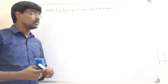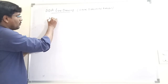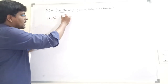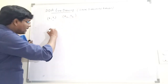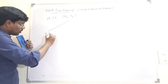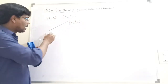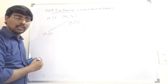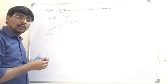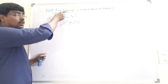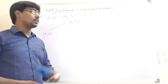The Line Drawing Algorithm means we are given two endpoints of a line. For example, one endpoint is x1, y1 and the second endpoint is x2, y2. We have to draw a line from x1, y1 to x2, y2. Our aim is to identify the intermediate points from the first point to the second point using the DDA Line Drawing Algorithm.